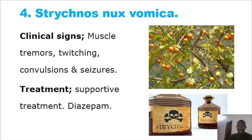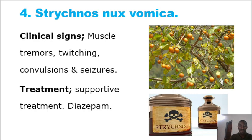The clinical signs of Strychnos nux-vomica poisoning — the seeds are the toxic part. You will see muscle tremor, seizures, convulsions, and then death. Treatment includes supportive care and administration of diazepam.